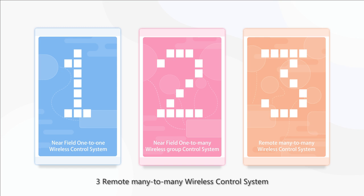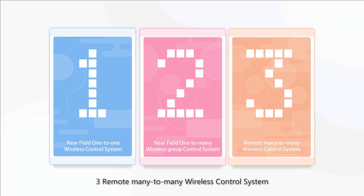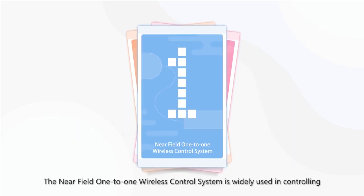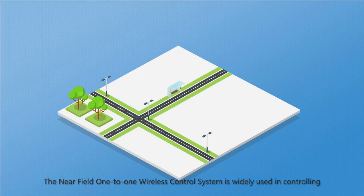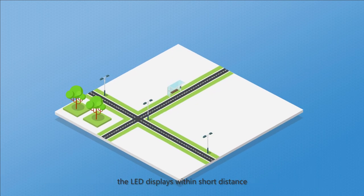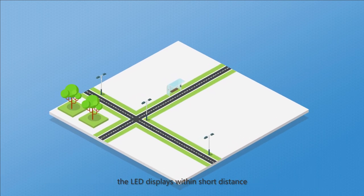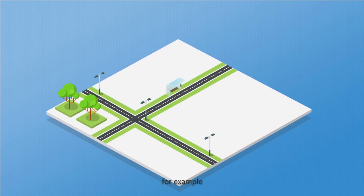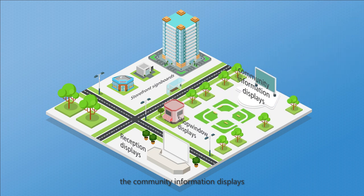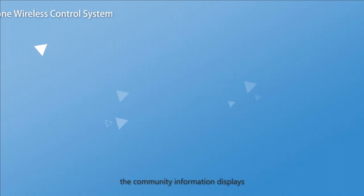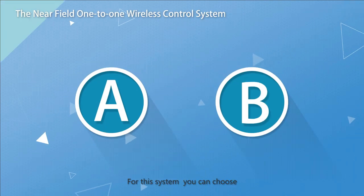The Near Field 1-to-1 Wireless Control System is widely used in controlling LED displays within short distance. For example, the storefront signboards, the reception displays, the shop window displays, and the community information displays.